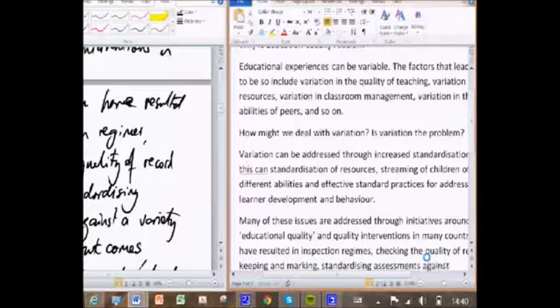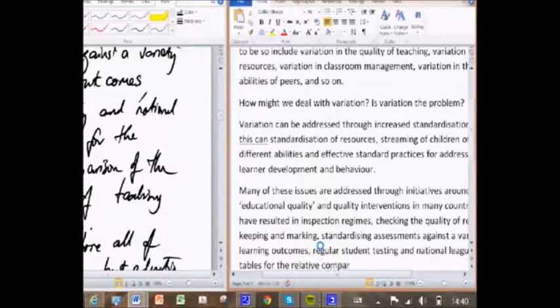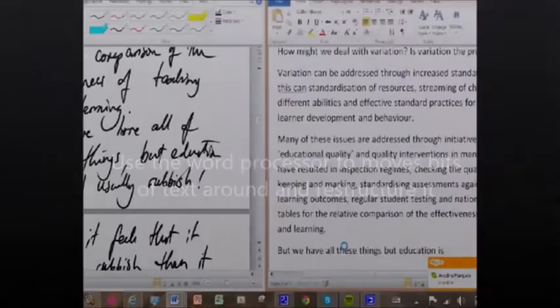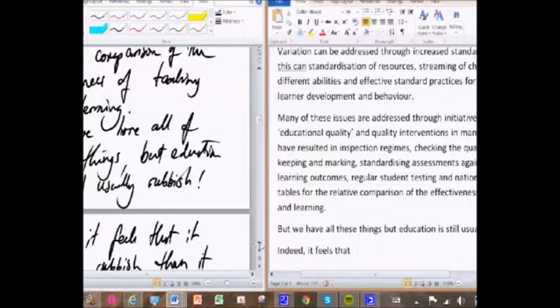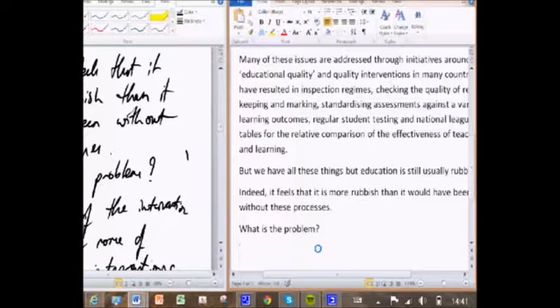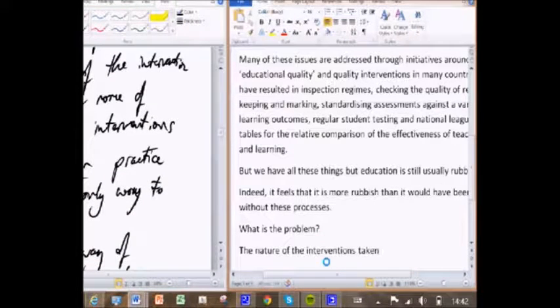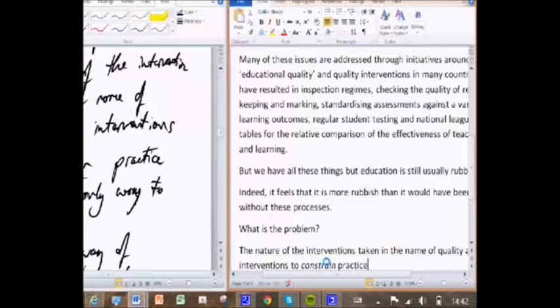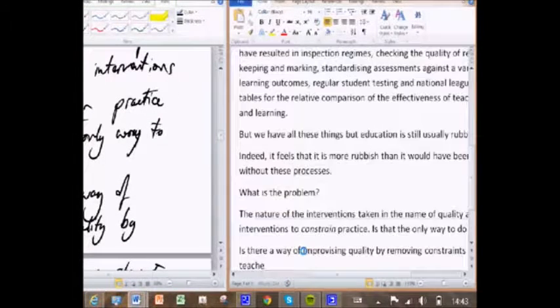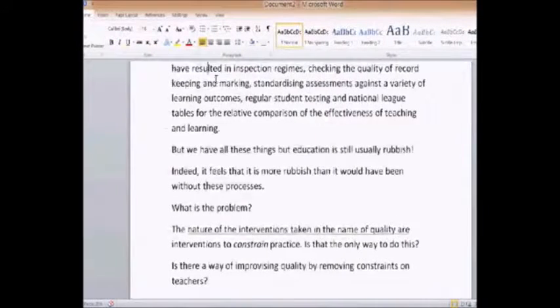I know that this paragraph that's coming out right now is not terribly polished and what I now need to do is get it into the word processor and start moving bits around so that I can make it much, much tighter in the way that it expresses what I want to say. So I've got down to it, but we have all these things, but education is still usually rubbish. Indeed, it feels it's more rubbish than it would have been without these processes. What's the problem? I think there's a little bit more to come.